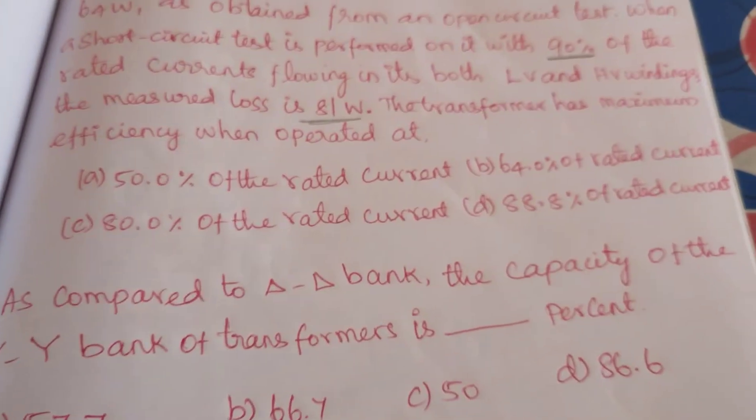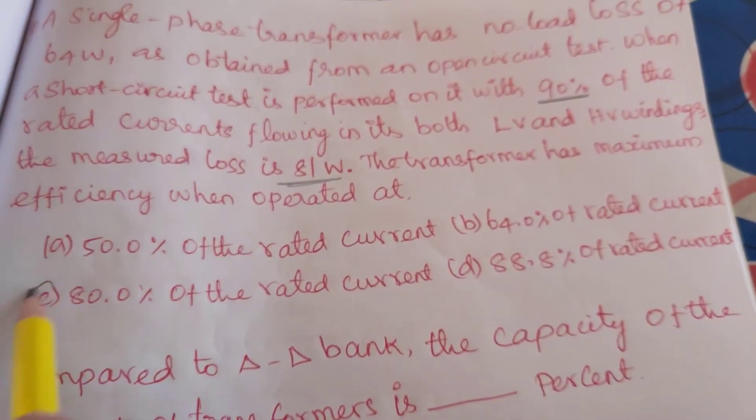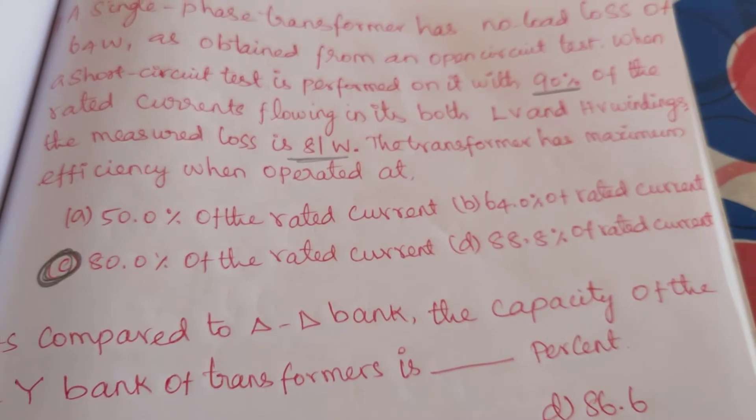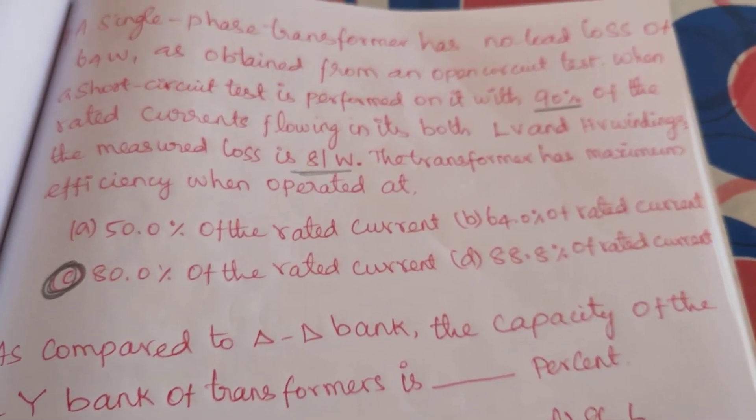So the nearby value is 80 percentage of the rated current.